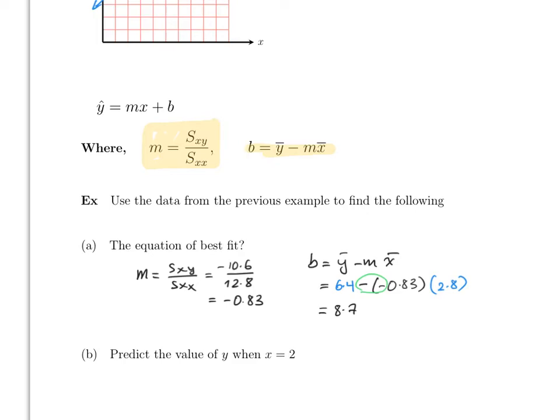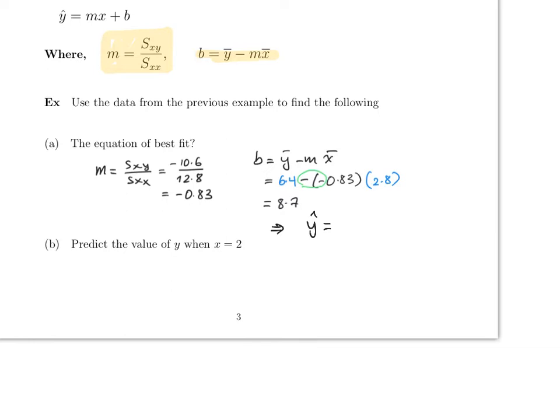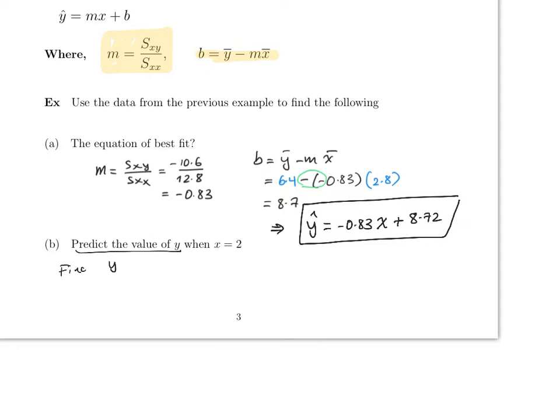Therefore the equation of best fit is: ŷ = −0.83x + 8.72. This is the regression line. As you can see, once you have all the values from the previous page, this is very easy.